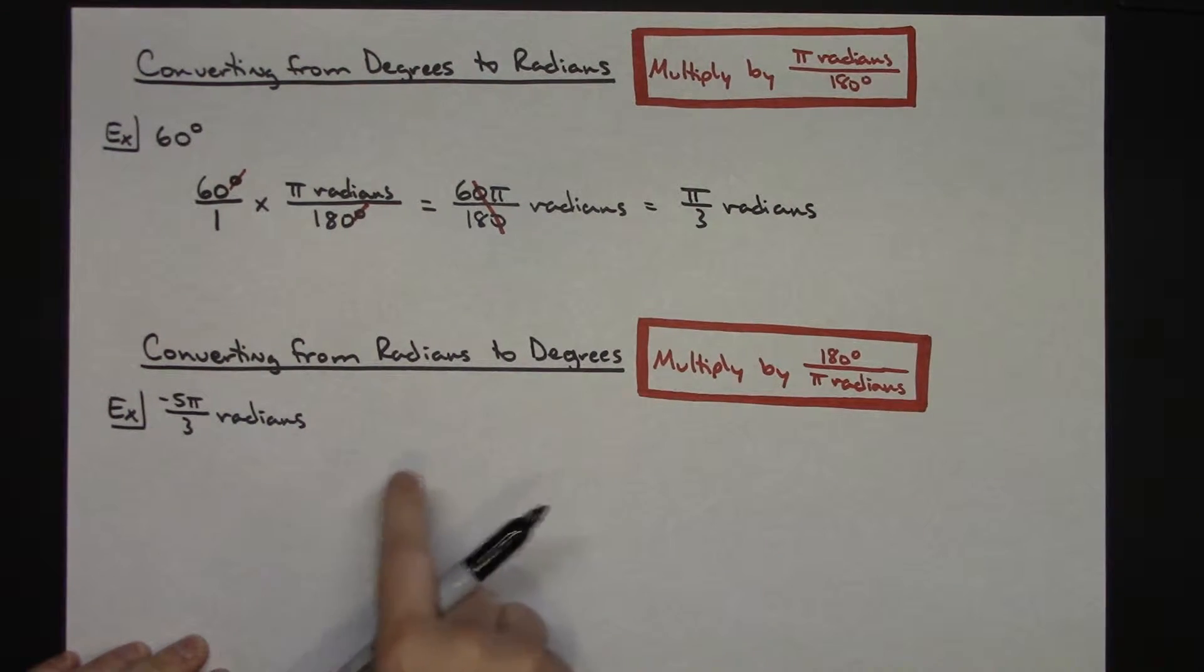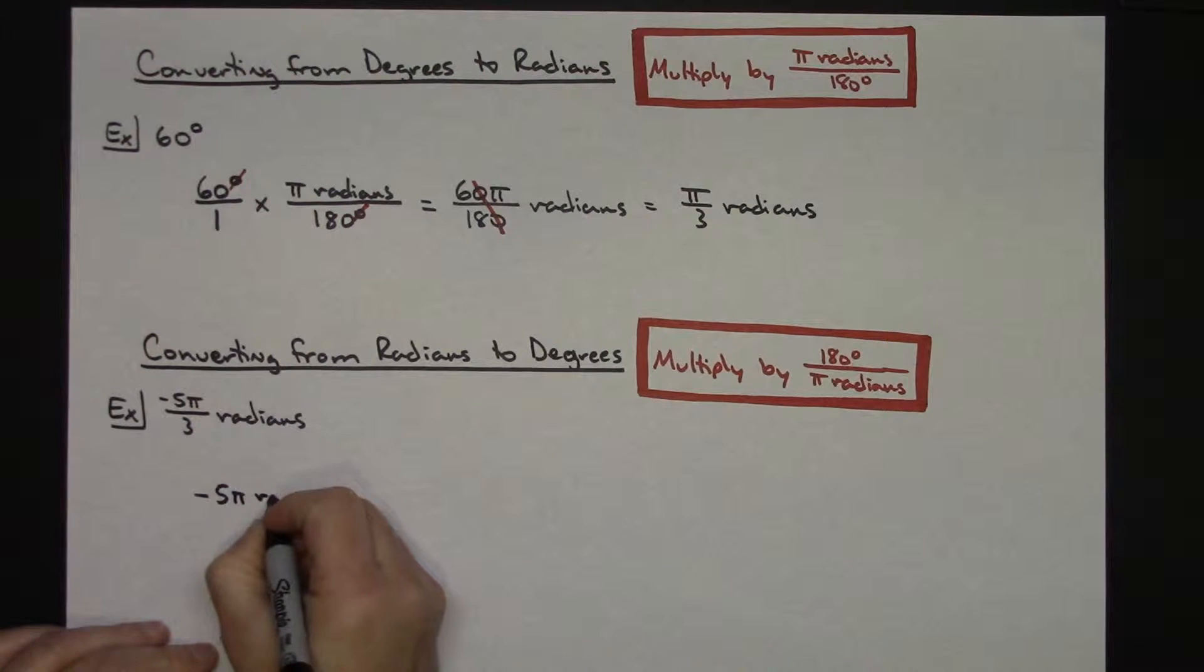I already have a fraction here. The only thing I am going to do when I write this, I am going to put my radians in the numerator when I go do that unit analysis. So I'm going to do a negative 5π radians over 3.